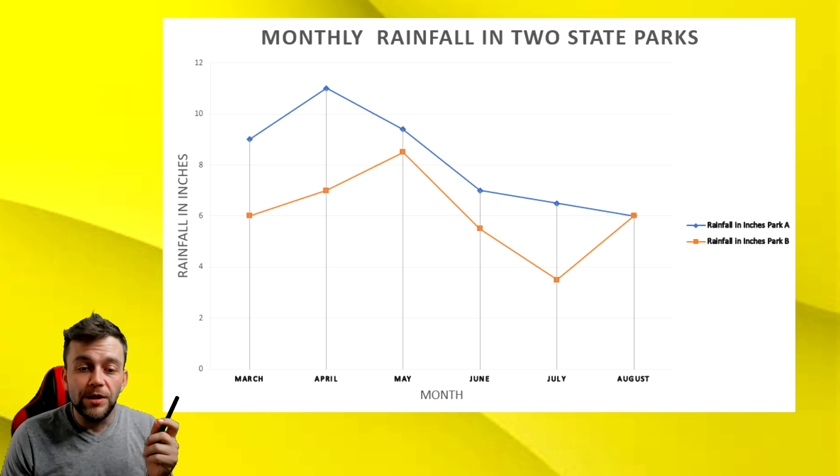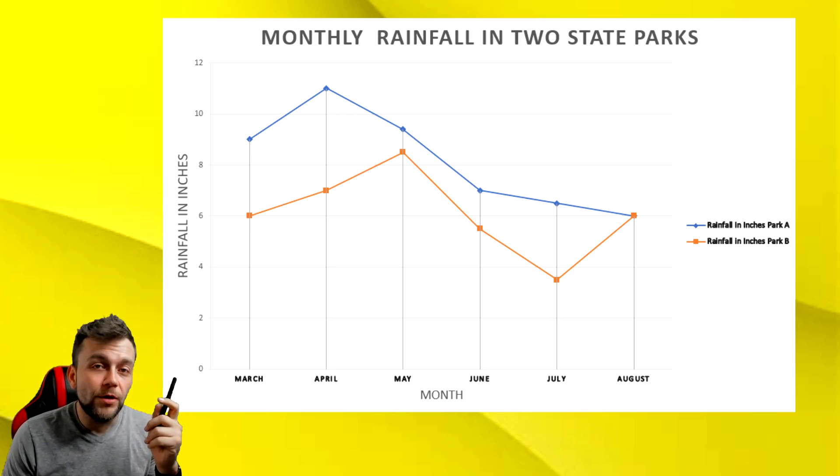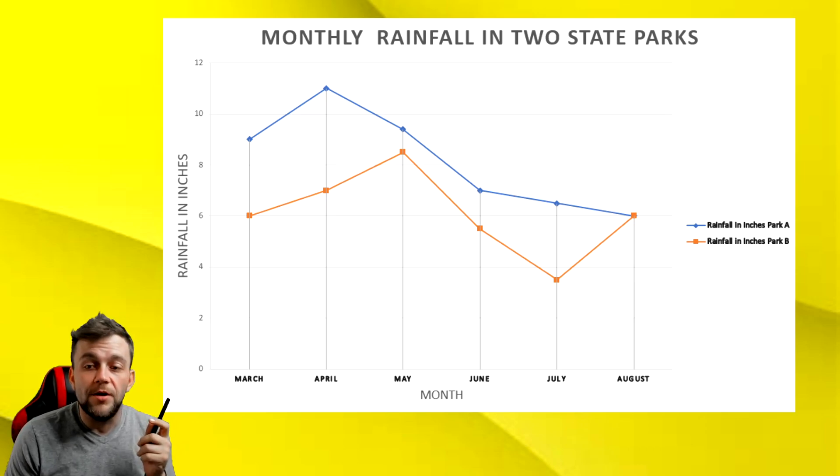So what we're going to be doing is comparing the rainfall between two state parks. We can look at it and we see that there are two different colored lines. Each one represents a park that they are measuring the rainfall in. The blue line is park A and the orange line is park B. And it goes over the course of six months.